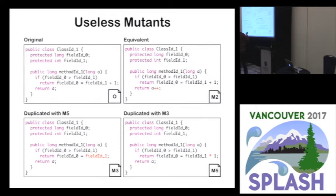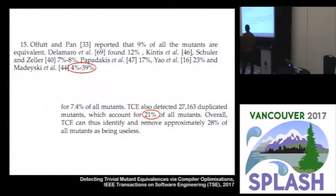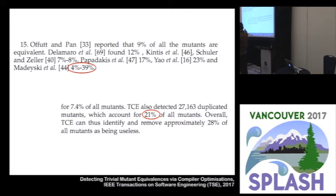We also have M3 and M5. M3 deletes the plus-one expression and M5 replaces plus by times. They are different from the original program — the behavior is different — but they are equivalent to each other, so one of them is useless. We wanted to understand how big this problem is. There was a paper in TSE (Transactions on Software Engineering) from March of this year. They said between 4 and 39% of mutants are equivalent, and they found 21% of mutants as duplicated — so a lot of mutants are useless.